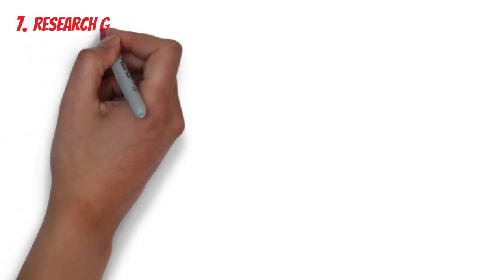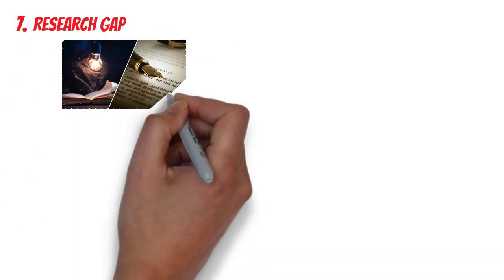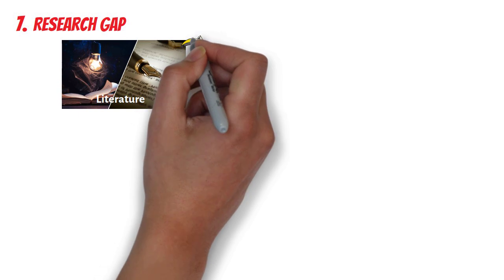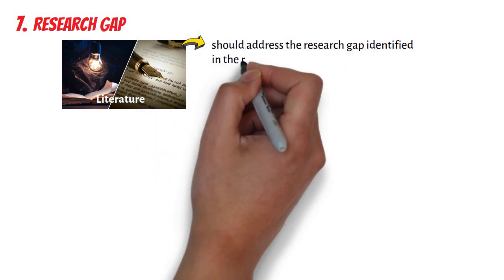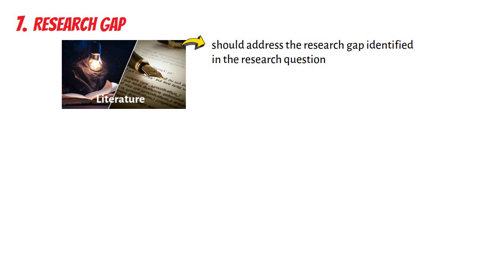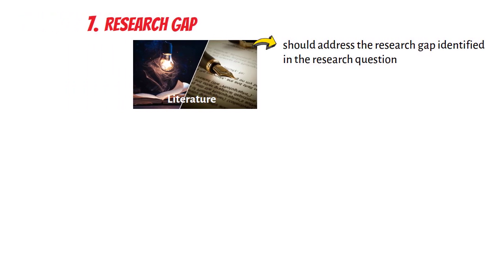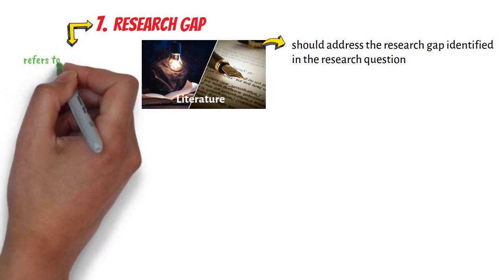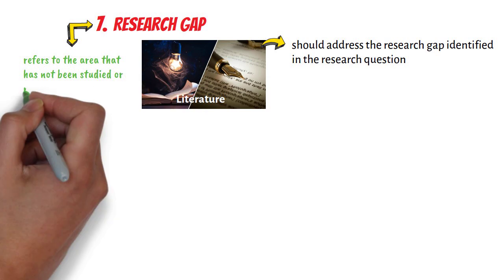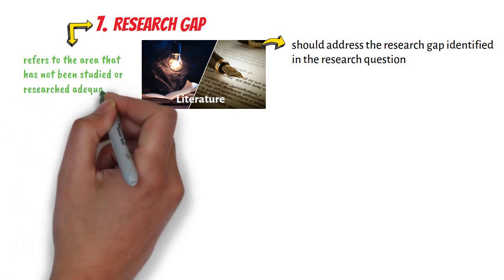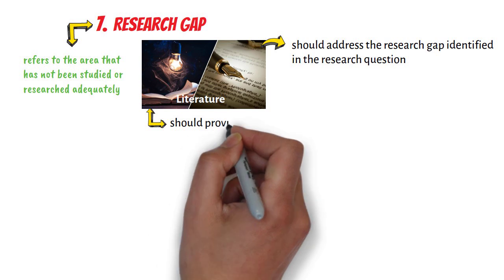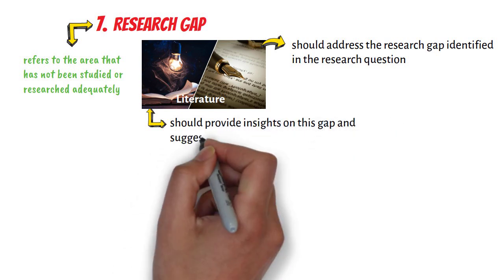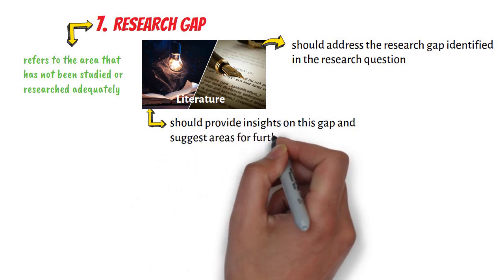Seventh, in terms of research gap: literature should address the research gap identified in the research question. The research gap refers to the area that has not been studied or researched adequately. The literature should provide insights on this gap and suggest areas for further research.